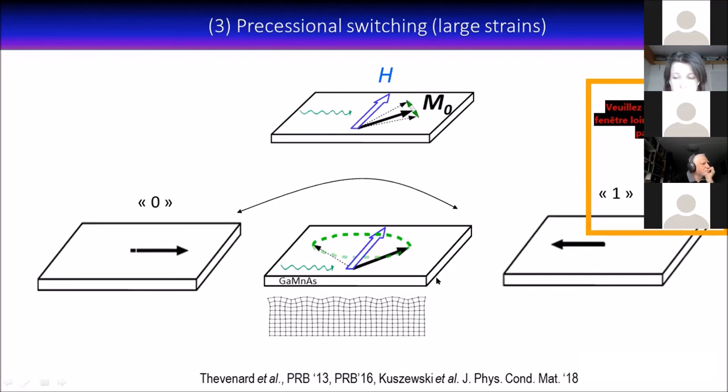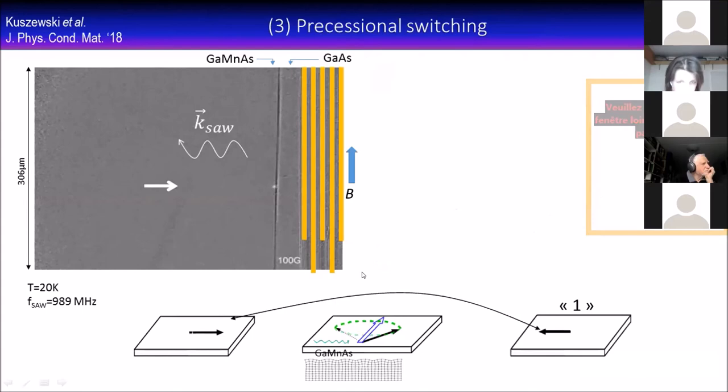We demonstrated that experimentally on out-of-plane magnetized gallium manganese arsenide and also in-plane magnetized material. This is what I'm going to show you here. This is a Kerr microscope image, a static image. We have our transducers right here, and the sample is magnetized to the right. This is an image taken at 100 gauss after a one gigahertz SAW pulse at 20 Kelvin. We just have this white blip here, which means I've basically not reversed anything.